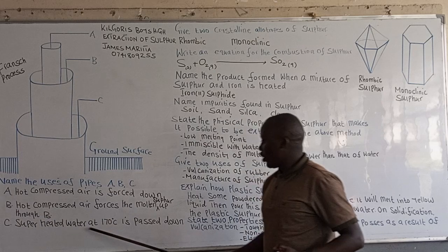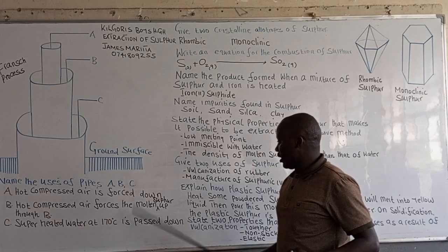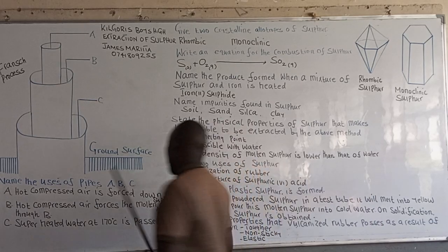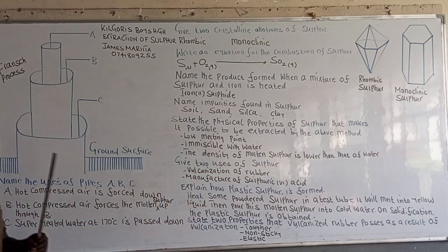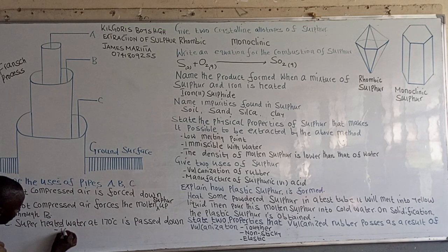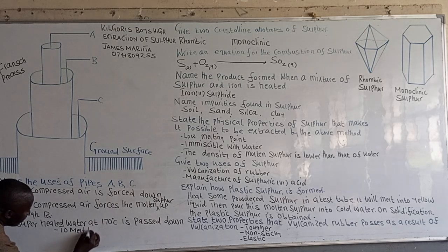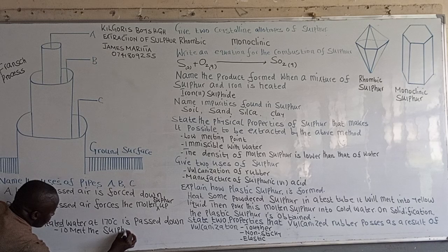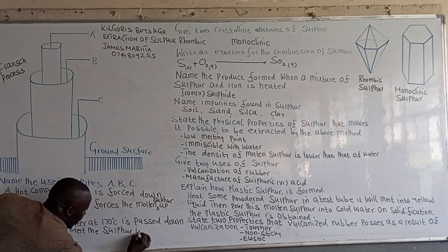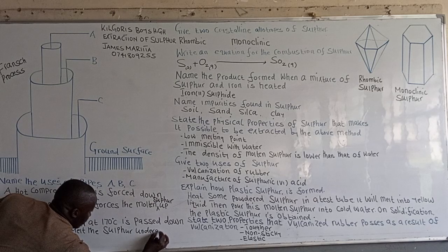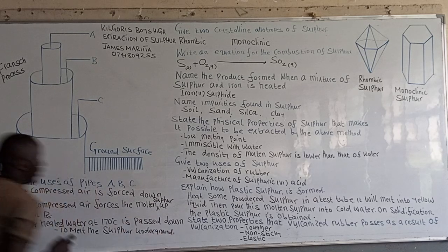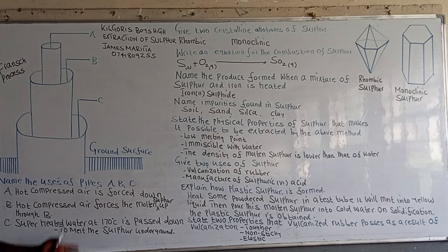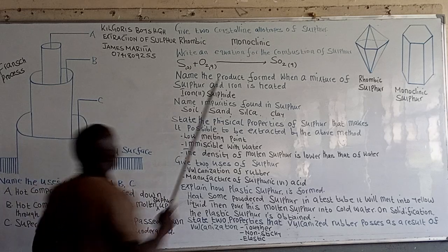We have the superheated water at a temperature of 170 degrees, which flows down through pipe C. The purpose of this superheated water is to melt the sulfur underground, to melt the sulfur deposit underground. That is why we have this water heated at a very high temperature — in order to ensure that sulfur remains in a molten state.